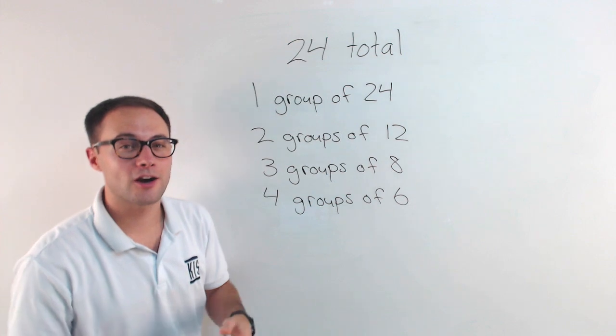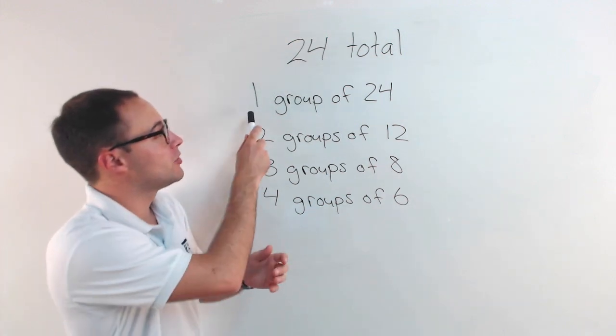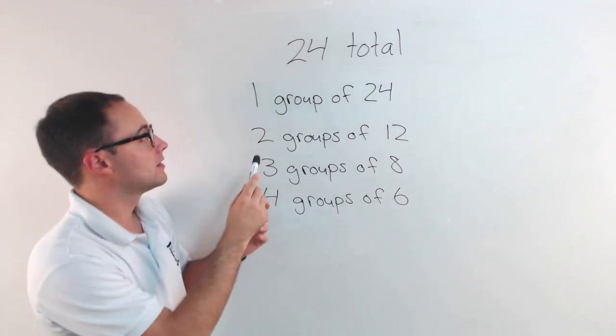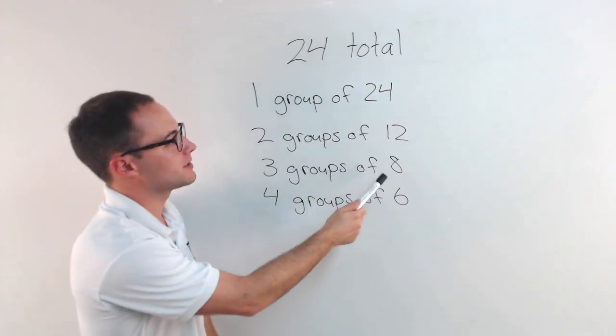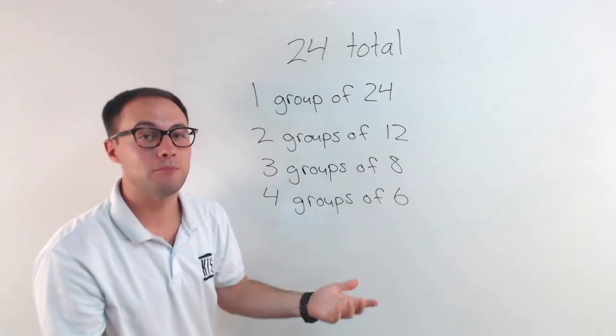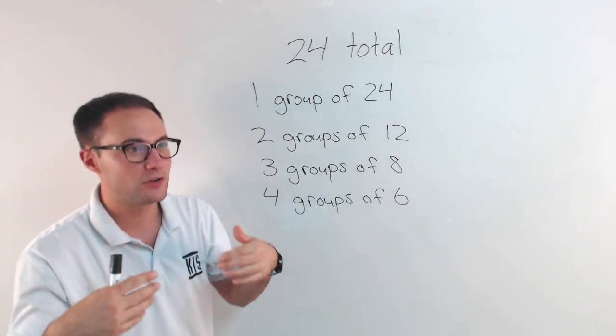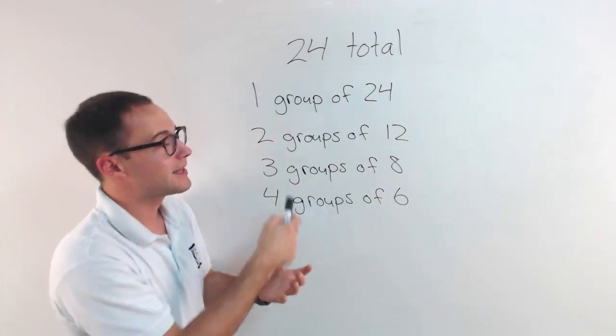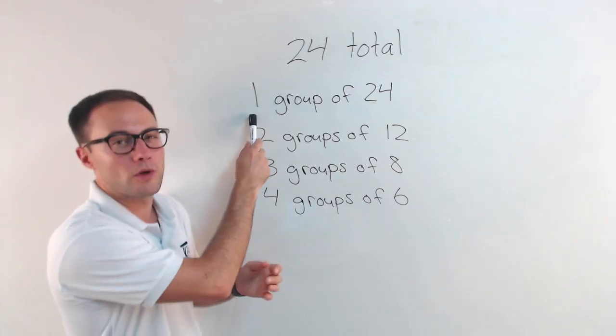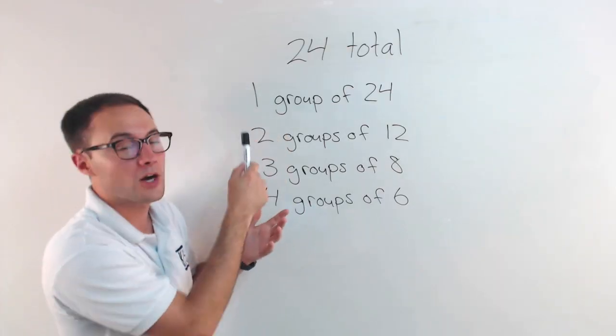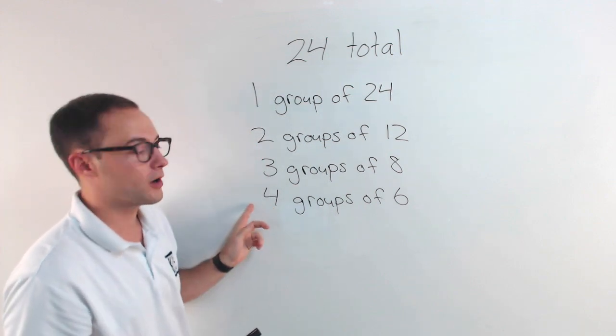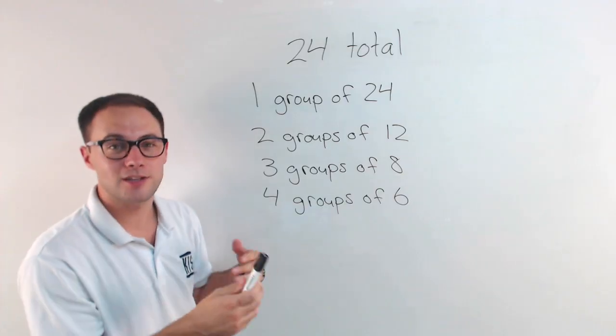What I just listed here are called factor pairs. If you notice, each one of these numbers are a factor of 24. 24 is divisible by 1, 2, 3, 4, 6, 8, 12, and 24. They're all factors and we listed them in pairs. So if you see a problem that's asking about factor pairs, that's what you do. You list them in pairs and it's good to go in order. Always start with one. One's always a factor of every number. Notice I did one and then two, three, four, and then I got to six. You can stop when it starts to repeat.